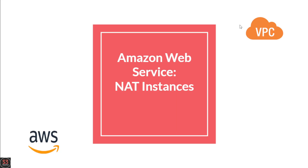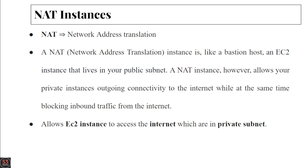Good morning and welcome back to part 7 of our VPC playlist. In this video we are going to learn what NAT instances are — NAT stands for Network Address Translation. A NAT instance is like a bastion host, an EC2 instance that lives in your public subnet. A NAT instance allows your private instances outgoing connectivity to the internet while at the same time blocking inbound traffic from the internet.